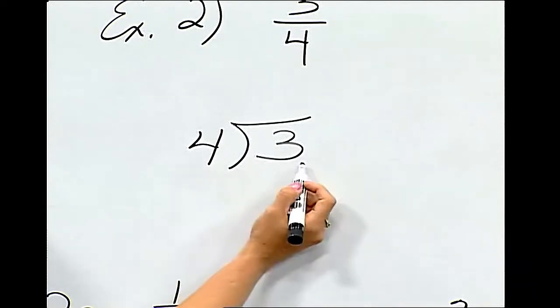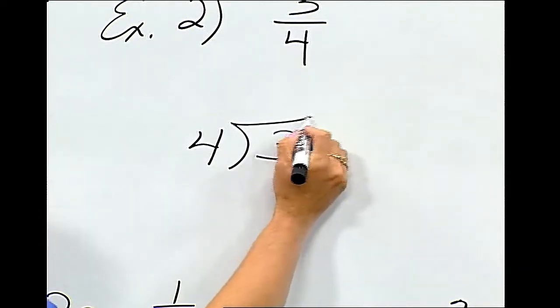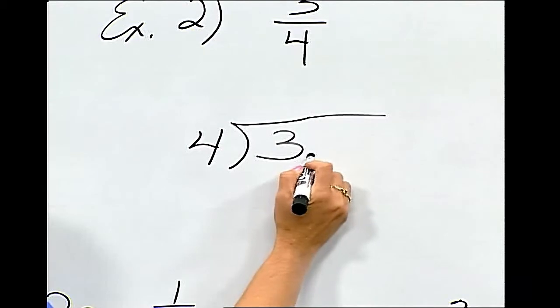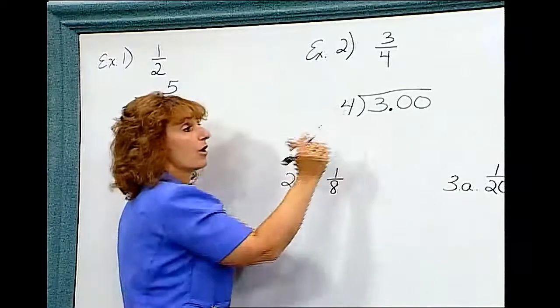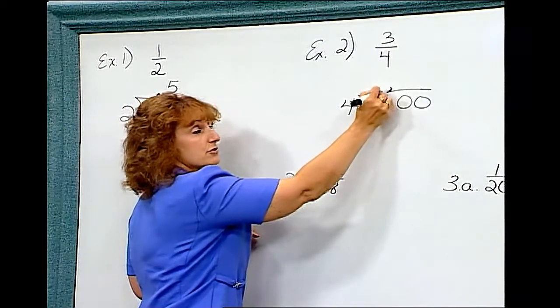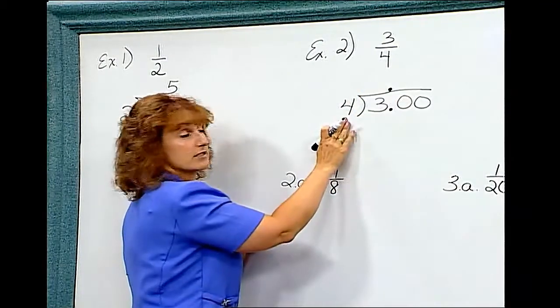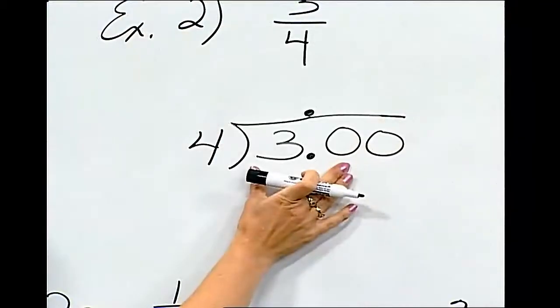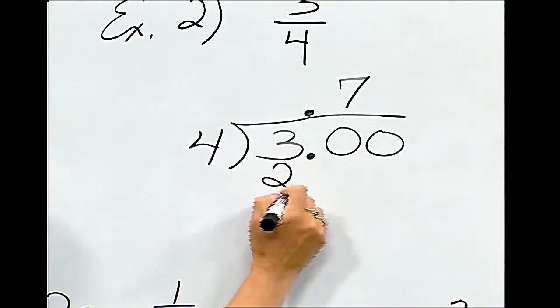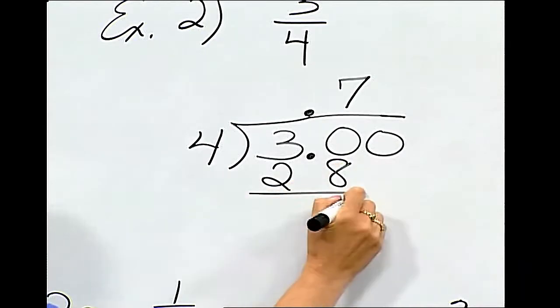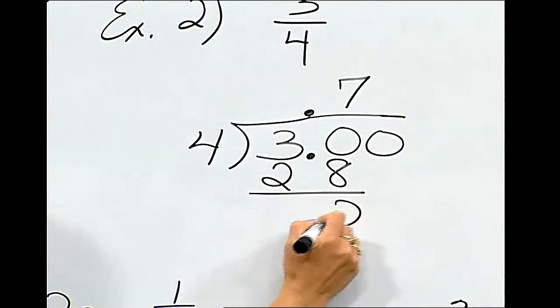We cannot put 4 into 3. 3 is too small, so we place a decimal point and some 0s. We bring that decimal point straight up, and now we can divide. 4 goes into 30 7 times. 7 times 4 is 28. We subtract and get 2.